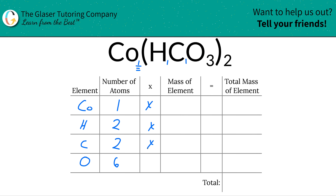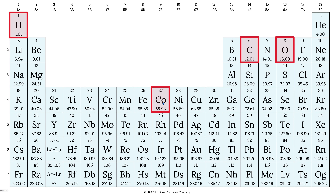Then we're going to take those numbers of atoms and multiply by the mass of each particular element. These masses are found on the periodic table. So cobalt is 58.93, hydrogen is 1.01, carbon is 12.01, and oxygen is 16. These masses can represent grams per mole or AMU, depending on whether you're finding molar mass or molecular mass.